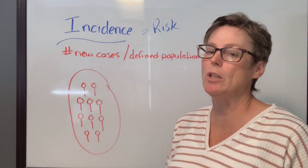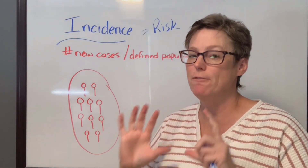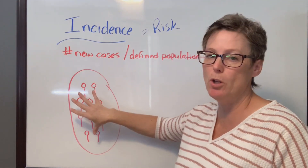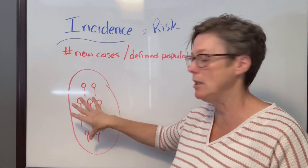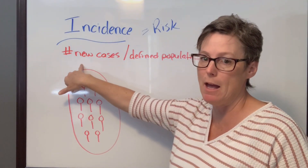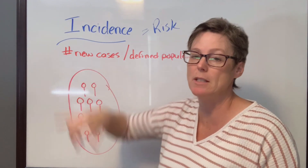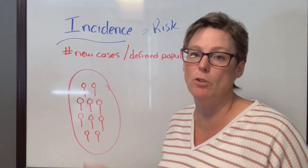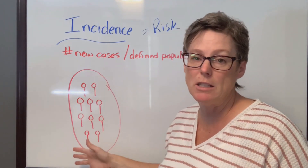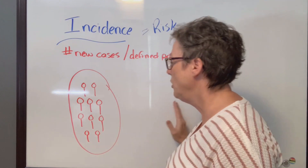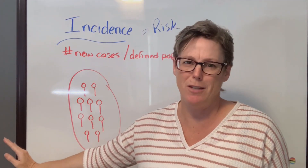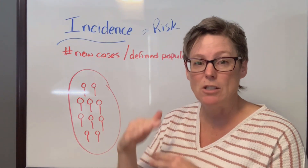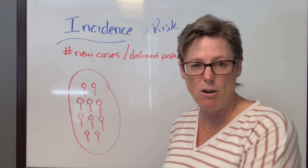When it comes to incidence rates, we're looking at how many new cases per a defined population. That defined population means everybody who belongs in this category needs to have the potential to become at risk or to move into a diagnosis of whatever it is you're measuring. This could be tuberculosis, heart attacks — if you were looking at heart attacks, you'd remove everybody under the age of 18 or even 30, because four-year-olds don't have heart attacks.